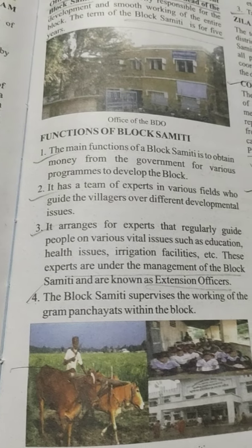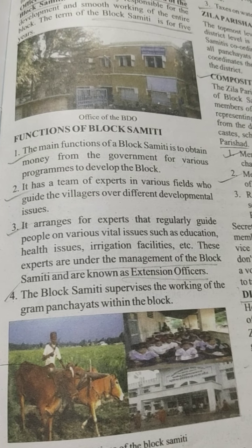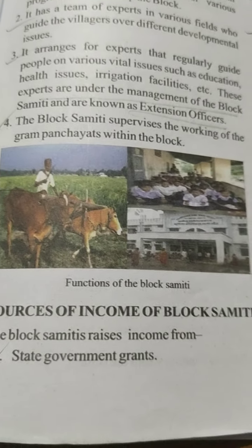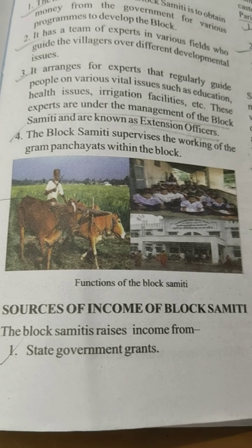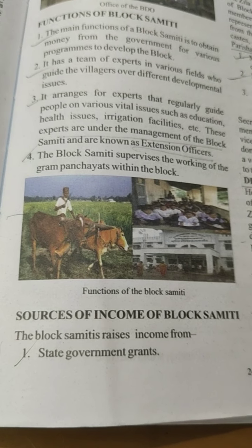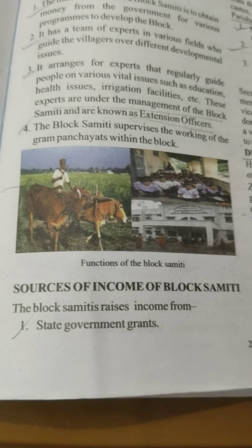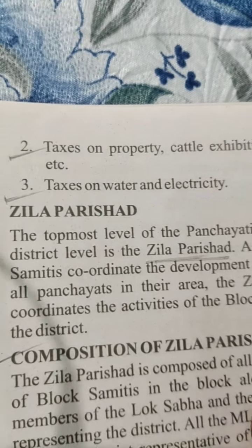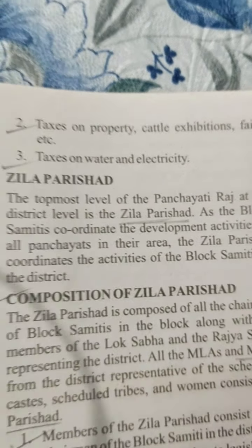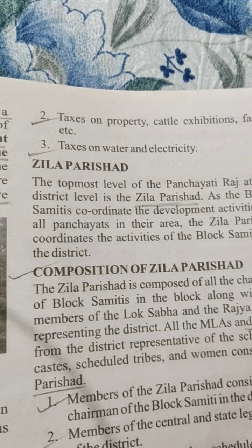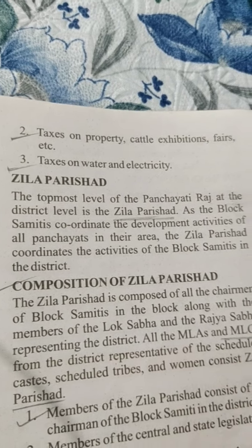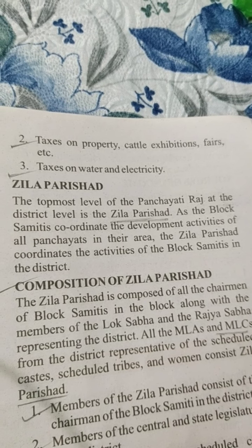Point 4 - the Block Samiti supervises the working of the Gram Panchayats within the block. Sources of income of Block Samiti: Point 1 - state government grants. Point 2 - taxes on property, cattle, exhibitions, fairs, etc., and taxes on water and electricity.